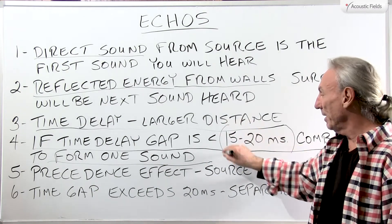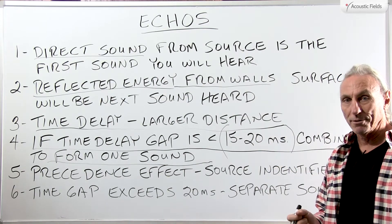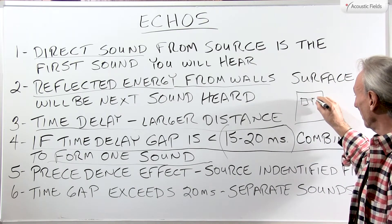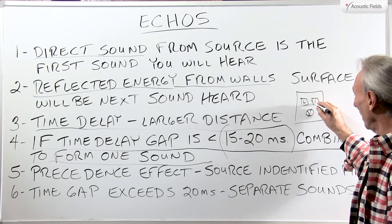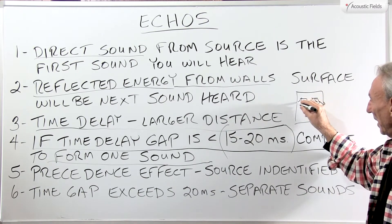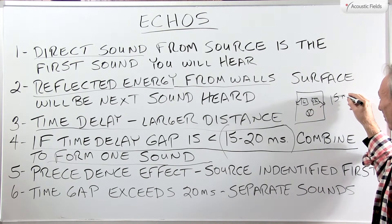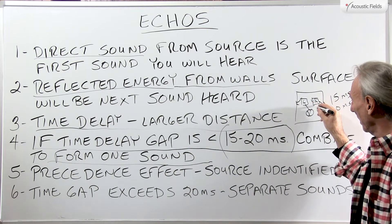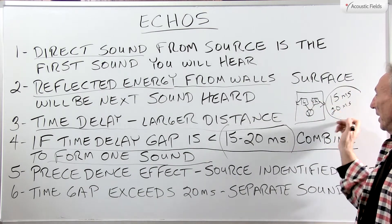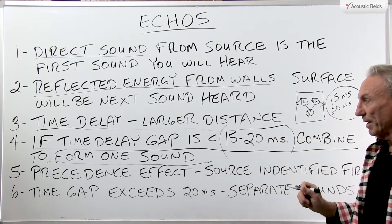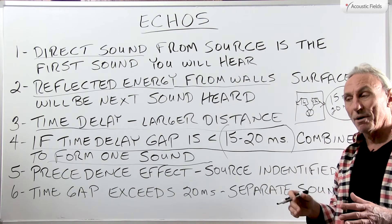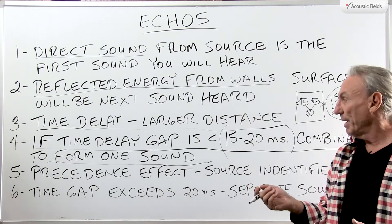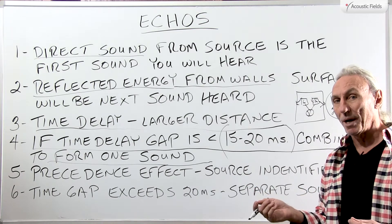For those familiar with time signatures, 15 to 20 milliseconds is the time signature we assign to reflections in our two-channel listening system from the sidewalls. We always try to shoot for treatment that gets the time signature of the sidewall reflections and the direct energy at our listening position within this time frame range. We want to form one sound — we don't want to be sitting in our listening room or mixing room and hear more reflected energy than direct.